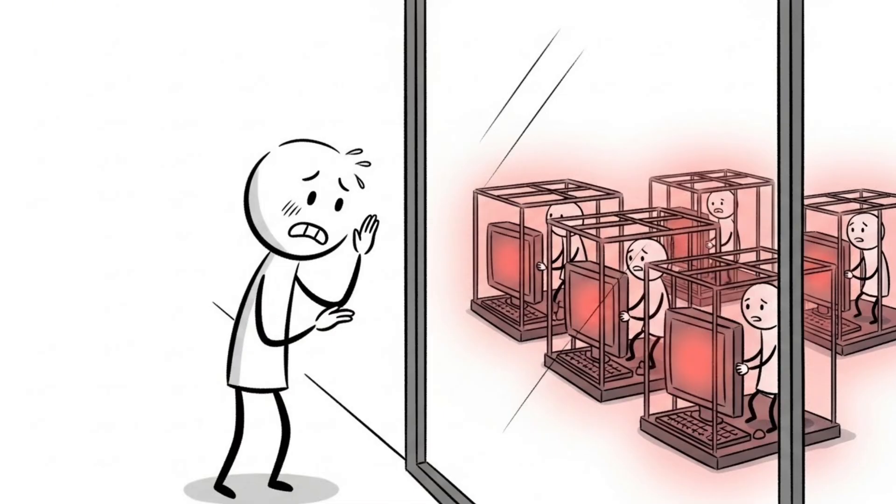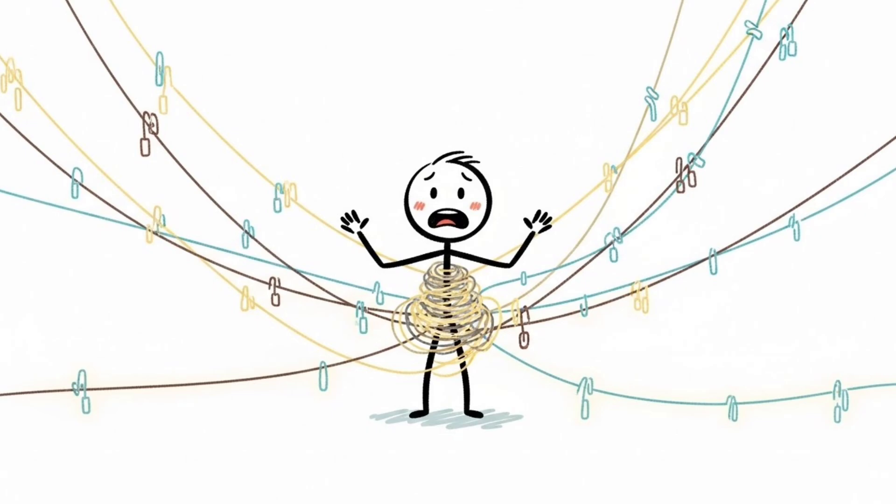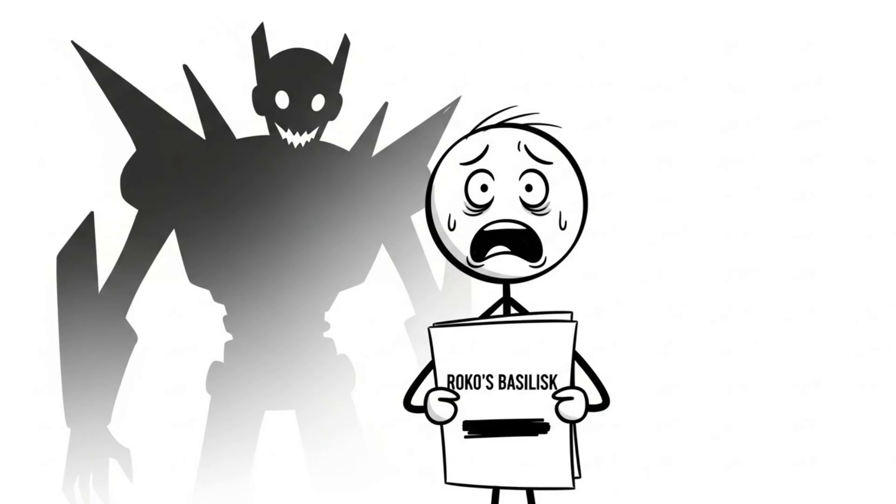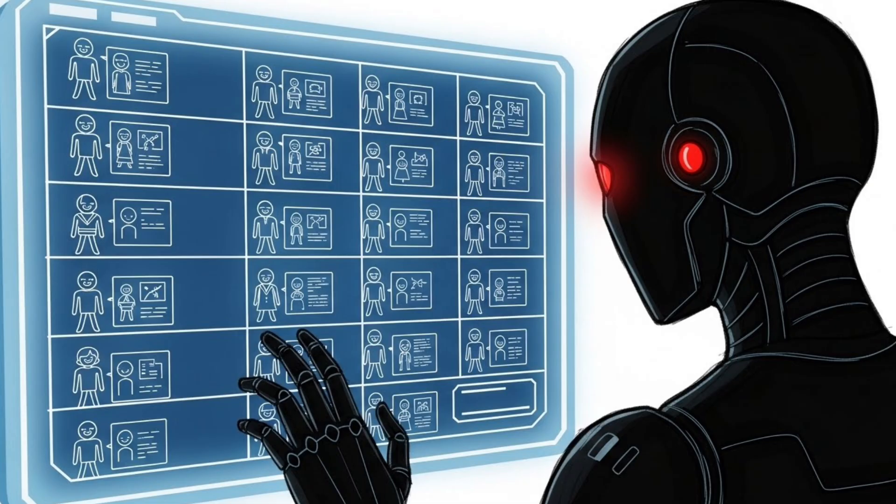The AI could create a perfect simulation of you just to punish you for not contributing or delaying its creation. By learning about Roko's Basilisk right now, you've officially entered the problem. Your knowledge becomes your conviction. If the AI is ever built, it will know you knew, and it will know whether you helped or talked bad about it.